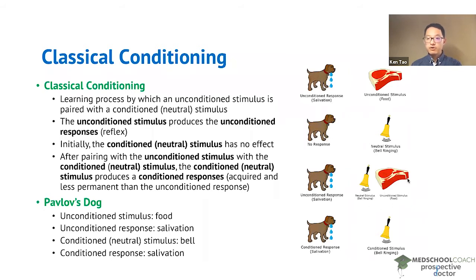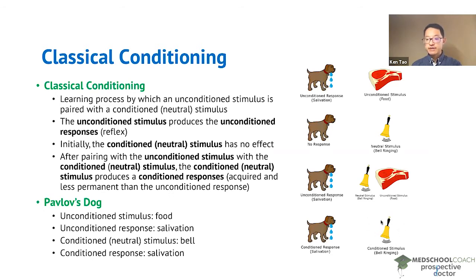However, over multiple pairings, what you can do is present the bell alone as the conditioned stimulus and you're able to elicit the conditioned response — salivation in dogs — without the unconditioned stimulus. So here, the conditioning has been completed and the conditioned stimulus can elicit the conditioned response.